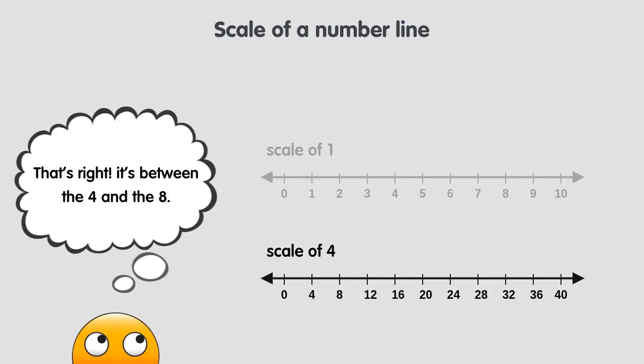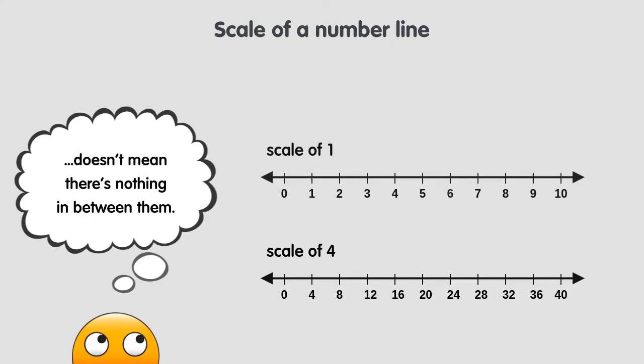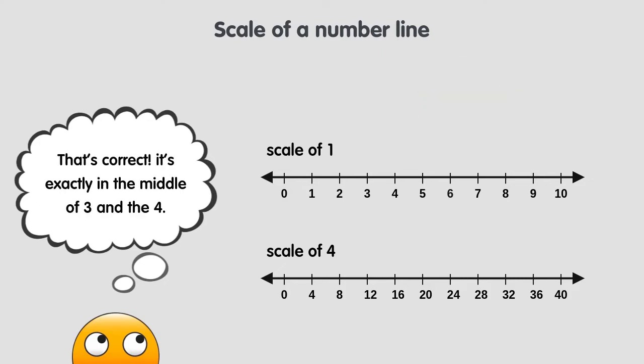That's where 6 is, even though its mark isn't shown. Just because a number line has marks showing specific numbers doesn't mean there's nothing in between them. Even in the first number line, there are numbers in between these spaces. For example, could you tell where the number 3.5 is on the first number line? That's correct. It's between the 3 and the 4, exactly in the middle.